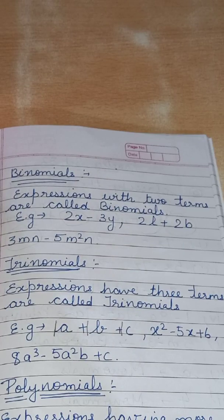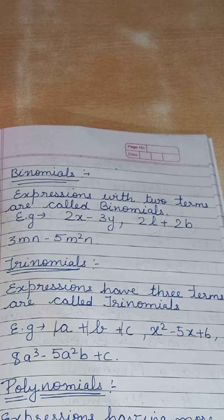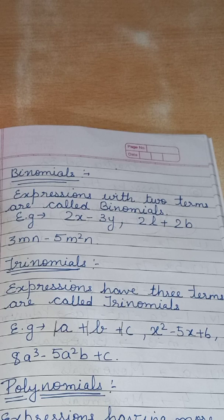Similarly, trinomial: expressions that have three terms. A plus b plus c — one, two, three terms — that is trinomial. x² minus 5x plus 6: x² is one term, 5x is one term, and 6 is one term — three terms. Also 8a³ plus 5a²b plus c — one, two, three terms — that is called trinomial.